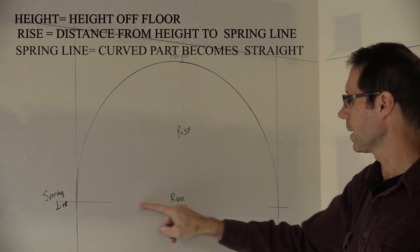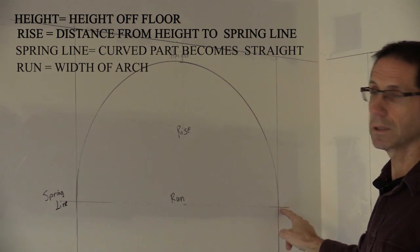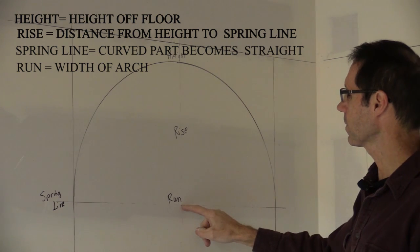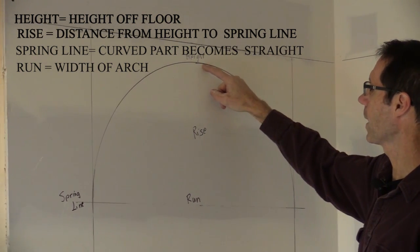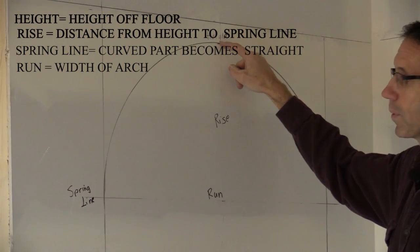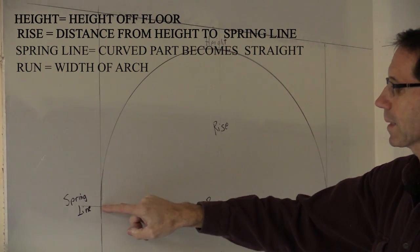The run is the width of your arch. So you have the four parts: the width, the run, the rise - the actual height of the curved part, the height off the floor, and the spring line.